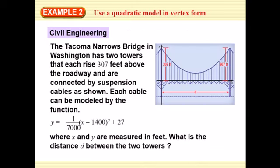Here in example 2, we're going to talk about the Tacoma Narrows Bridge. In class, I'm actually going to play a video for you, which explains one of my common sayings that I say all of the time. So the Tacoma Narrows Bridge in Washington has 2 towers, and they each rise 307 feet above the roadway. Notice it's above the roadway right here. It's a little bit hard to see when the lines are really small.